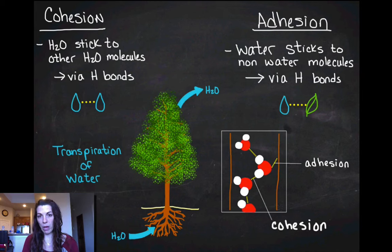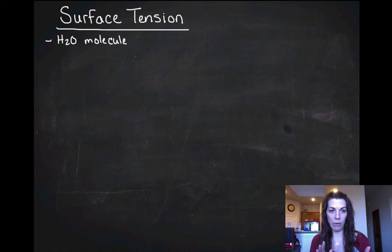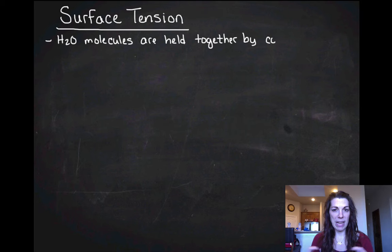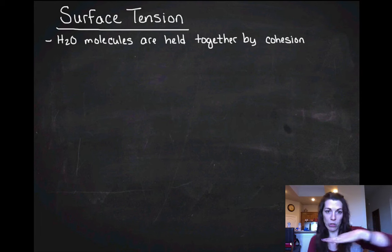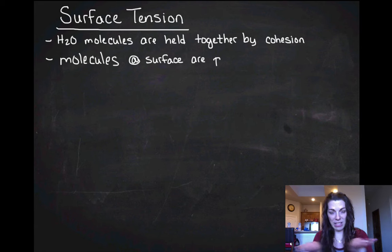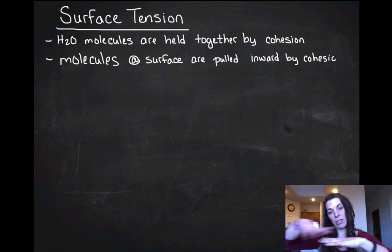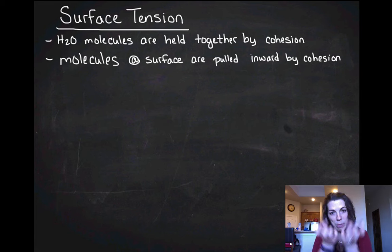The next thing to discuss with cohesion is surface tension. Surface tension occurs when water molecules are held together by the hydrogen bonding between them. The molecules at the surface don't have any water molecules above them, so all those hydrogen bonds pull them downward — those surface molecules are pulled in toward the center of the water by cohesion.